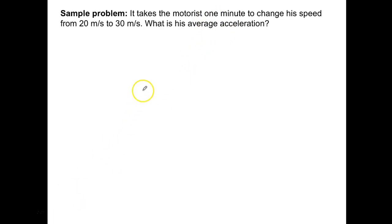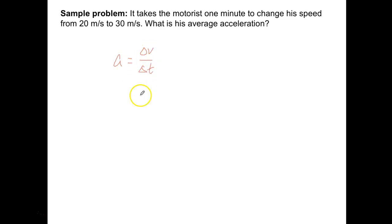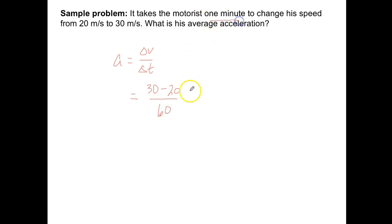It takes a motorist one minute to change his speed from 20 to 30 meters per second. We want to find his average acceleration. The average acceleration equation is change in velocity over change in time. Our change in velocity is the final velocity minus the original: 30 minus 20. We divide by the time — note that one minute must be converted to 60 seconds. So we get 10 over 60, which equals 0.17 meters per second squared.